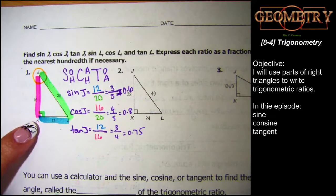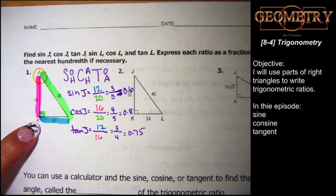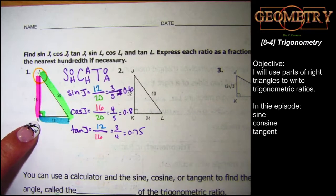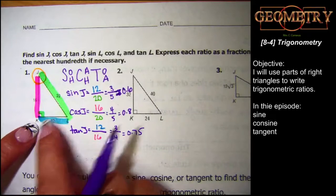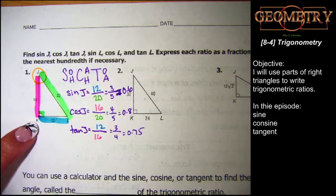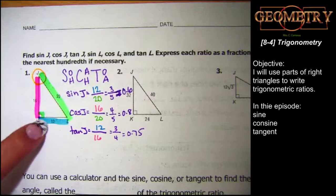What happens if we try to find the trigonometric ratios of the 90-degree angle? Don't. It breaks. Because the opposite becomes the hypotenuse — but you can't have the opposite be the same as the hypotenuse; they have to be different sides. We won't ever talk about the trigonometric ratio of the 90-degree angle.